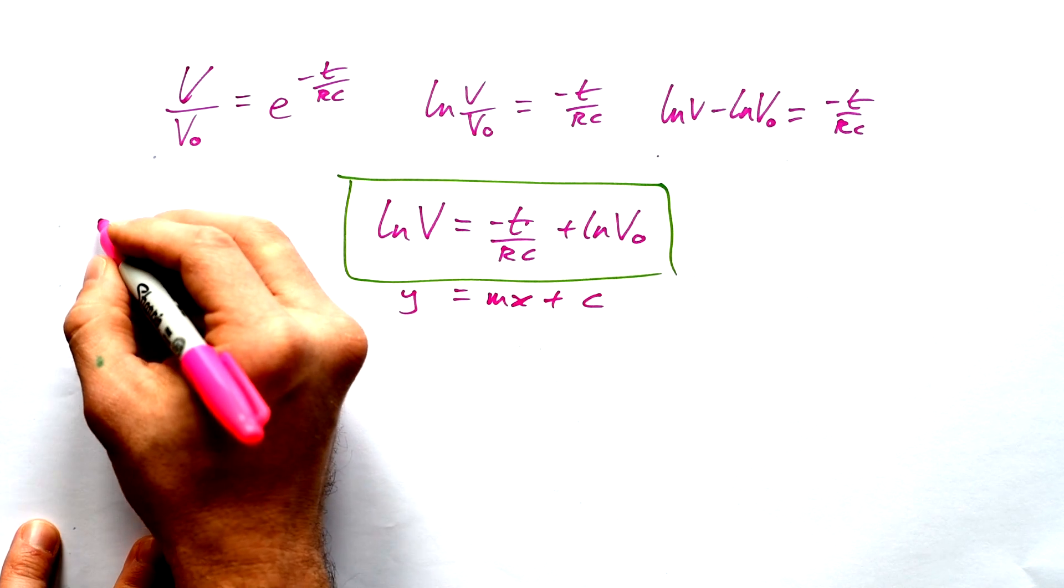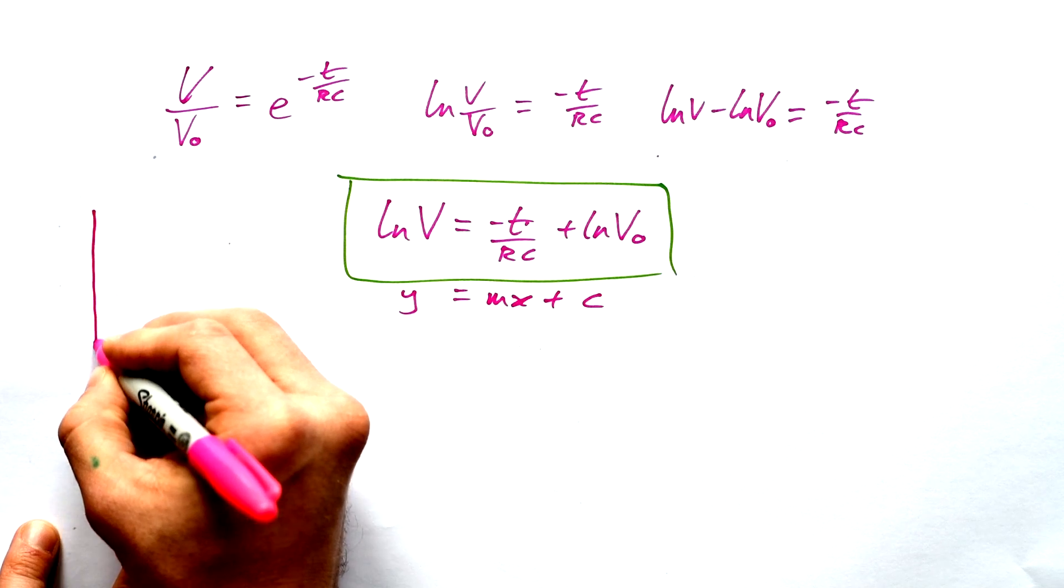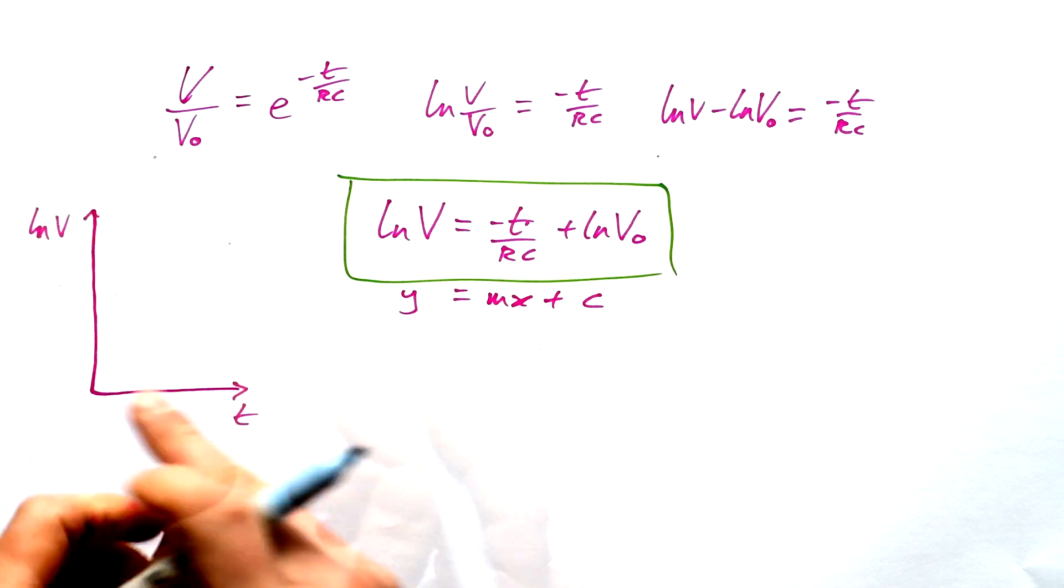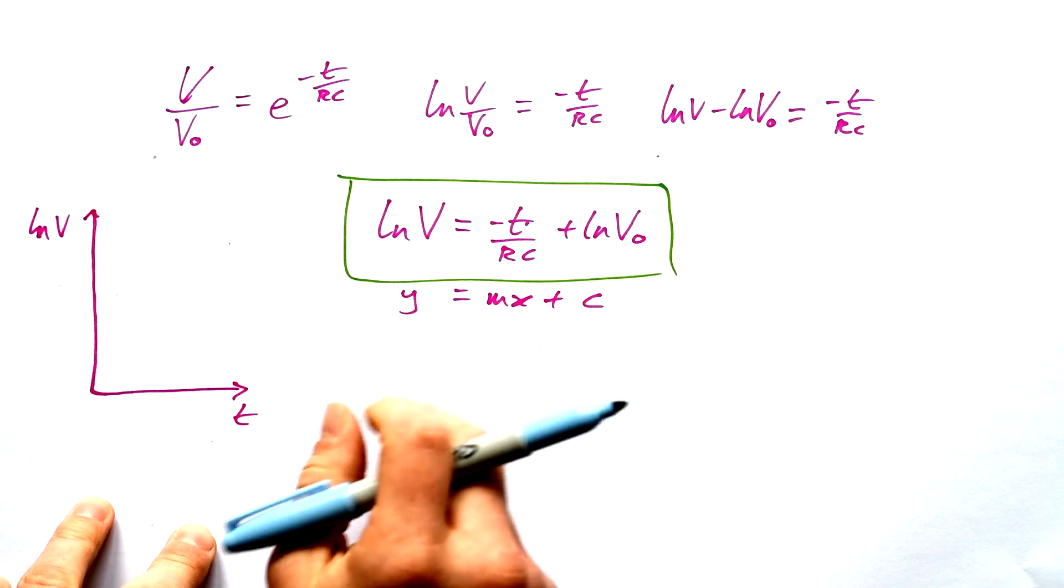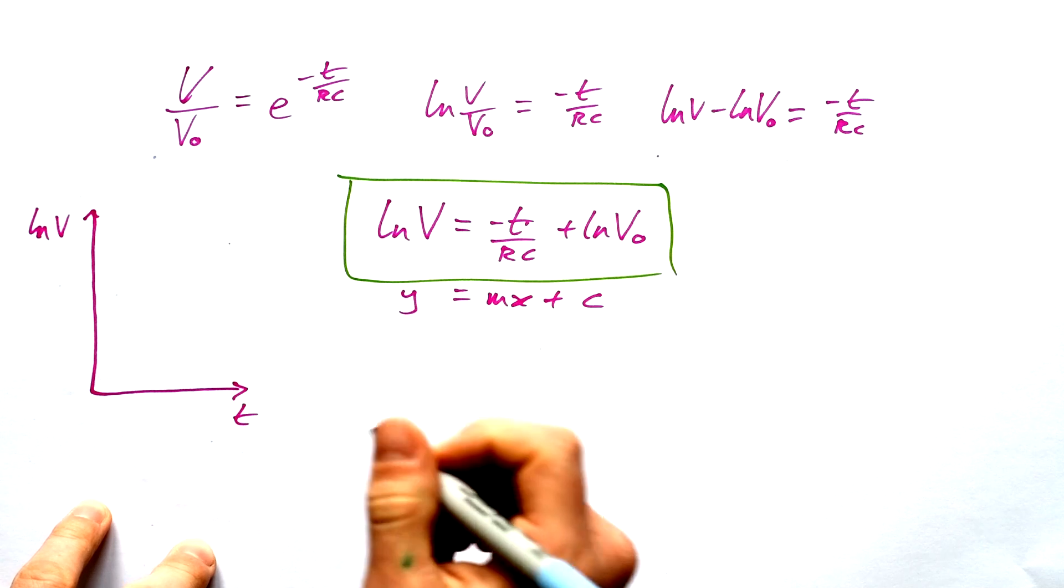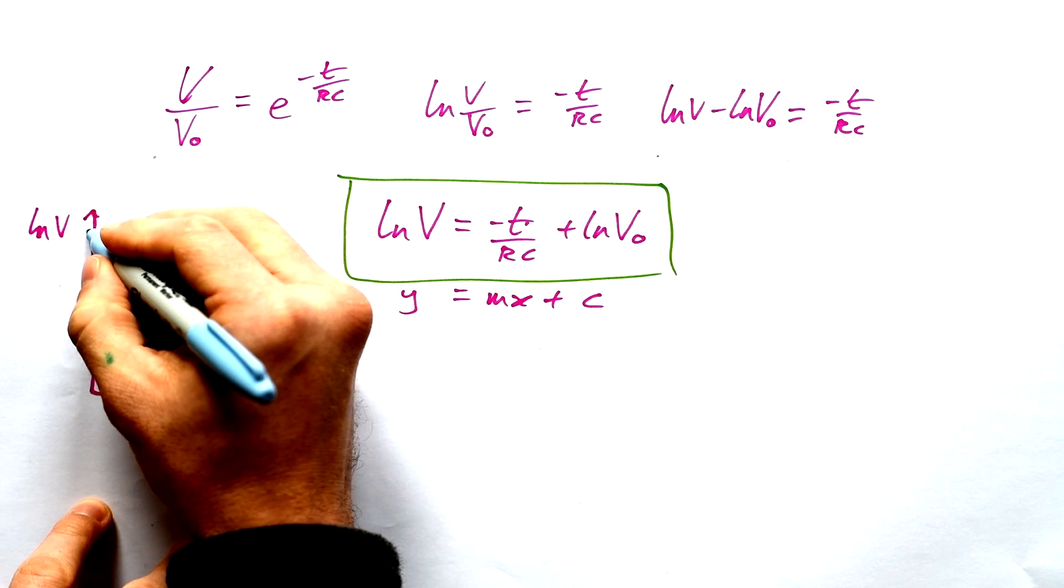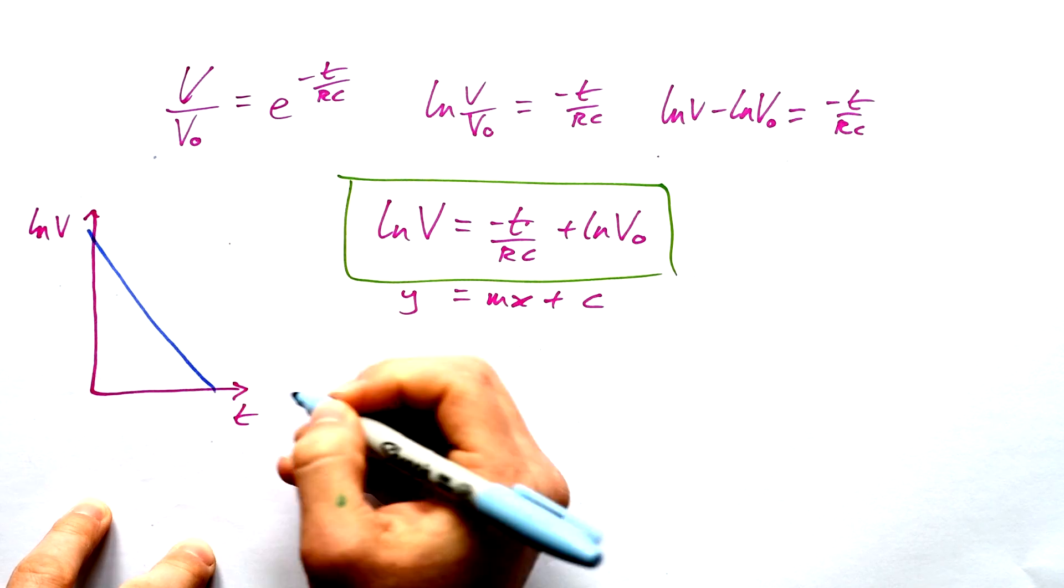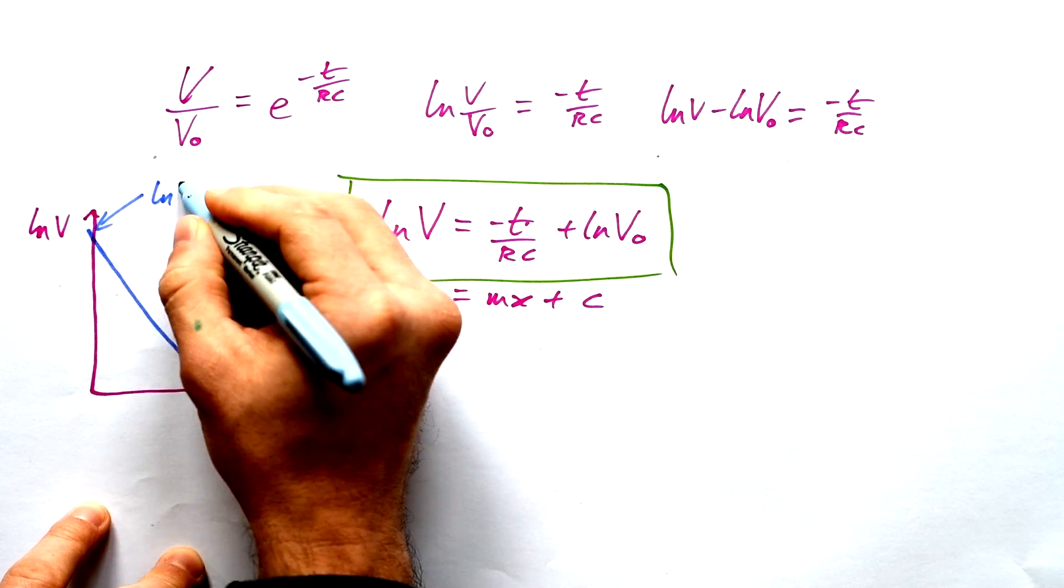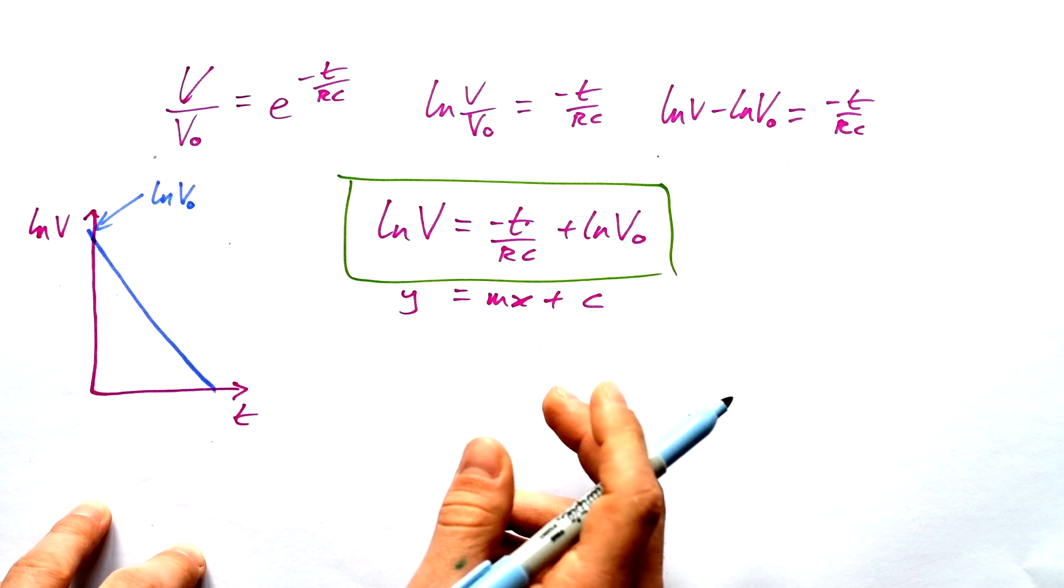So if we draw a graph of our results, and you do need to calculate the log of V and V0 for all your results, then we're going to end up with a straight line. However, we can see that we have a minus in this, so we're going to have a minus gradient. And so our graph is actually going to look like that. This here is our y-intercept. That is log of V0, which makes sense.